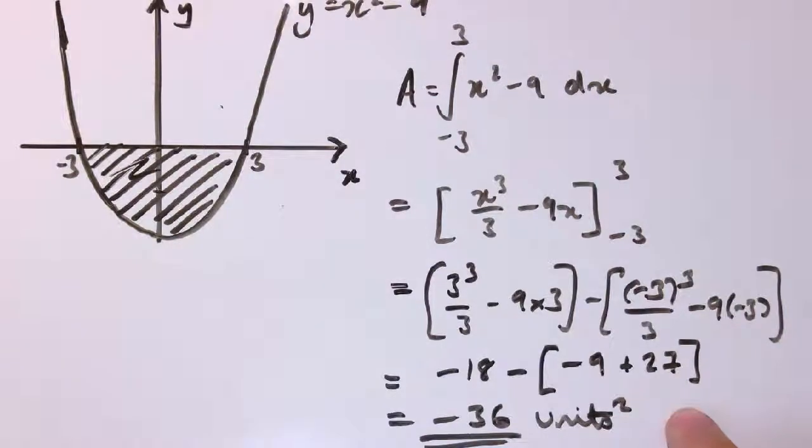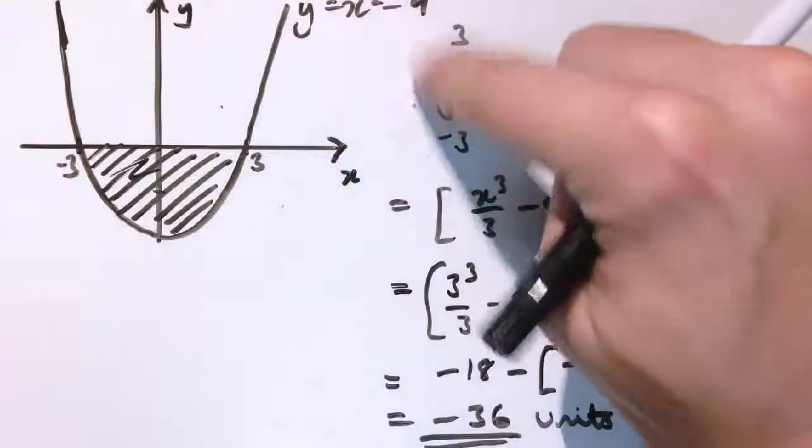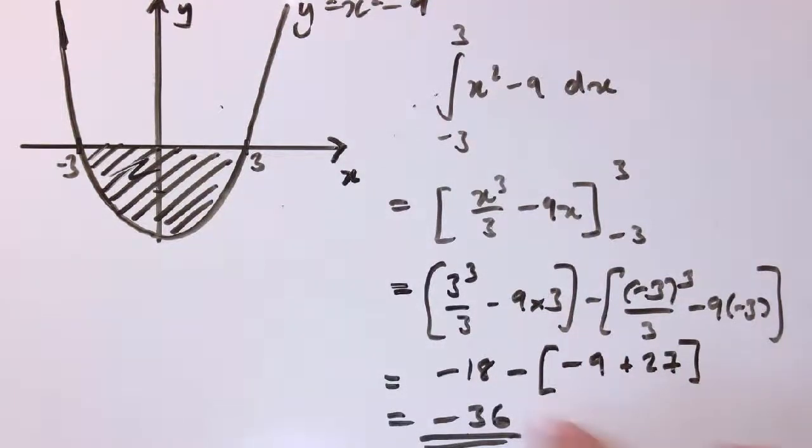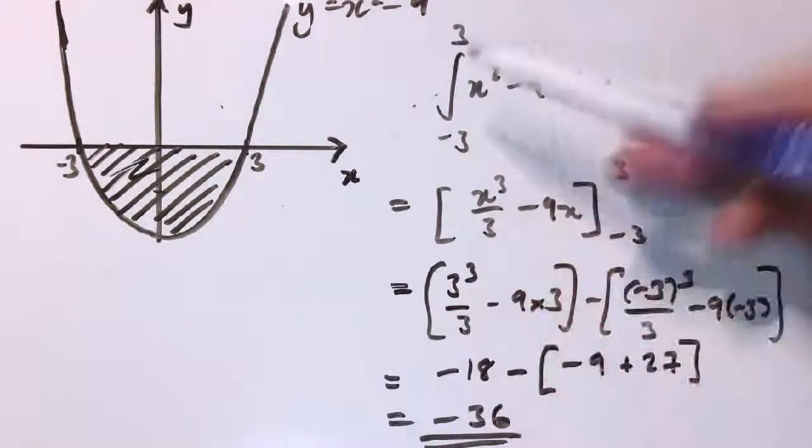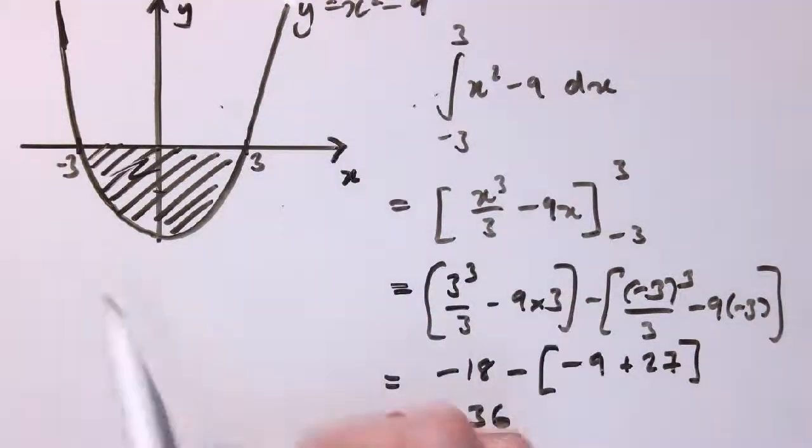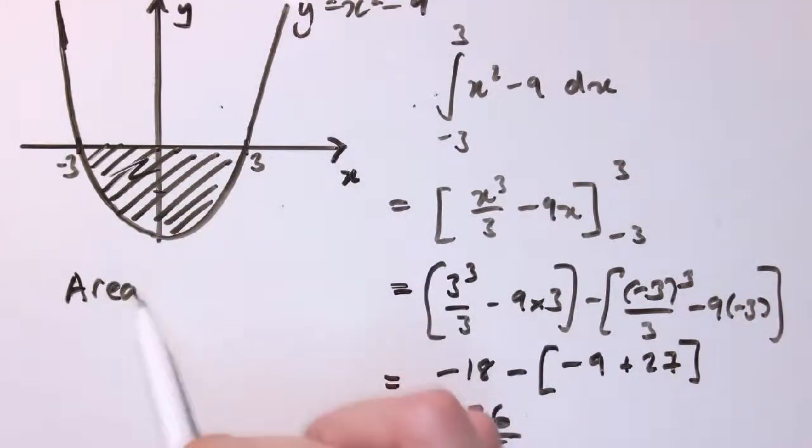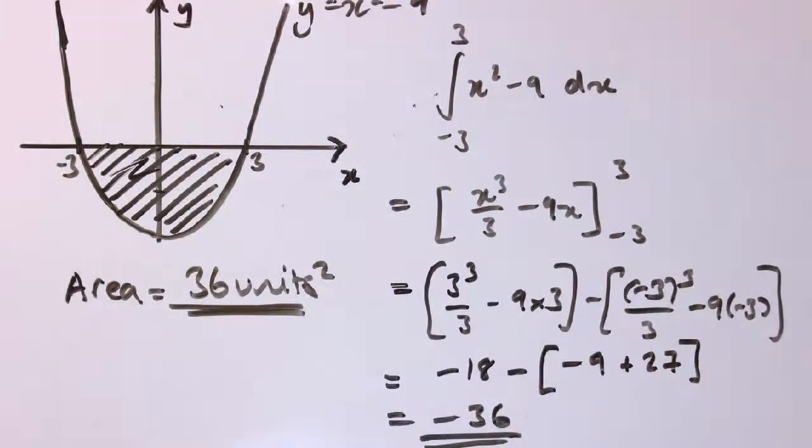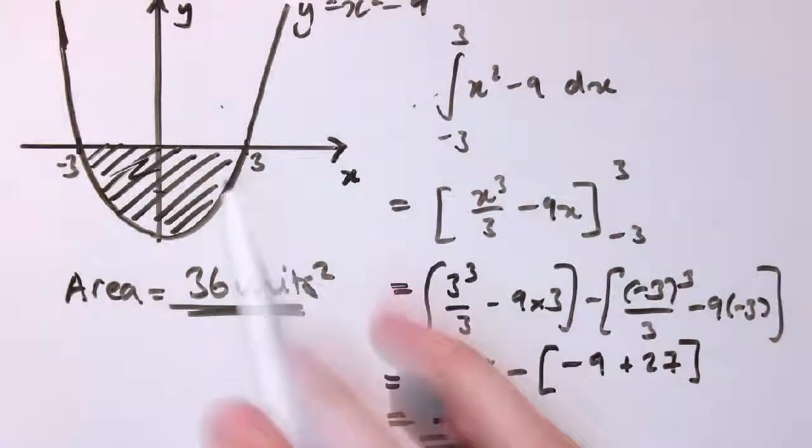So it's certainly the case that this integral is equal to -36—that's certainly true. But I can't really say anymore that the area is exactly equal to that integral. The value of this integral, purely as an integral without thinking about area, is -36, but the area that we're looking for is +36 units².